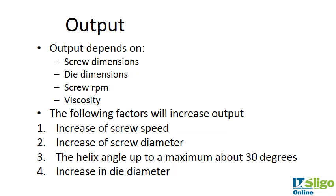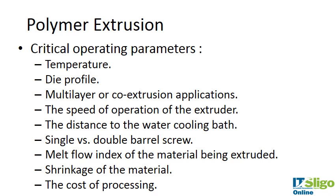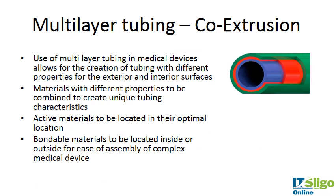The output of extrusion depends on screw dimensions, die dimensions, screw rpm, viscosity, and temperature. To increase output, you would increase the screw speed, increase screw diameter, change the helix angle of the screw thread up to 30 degrees, and increase the die diameter.